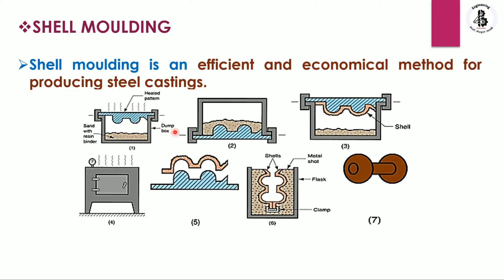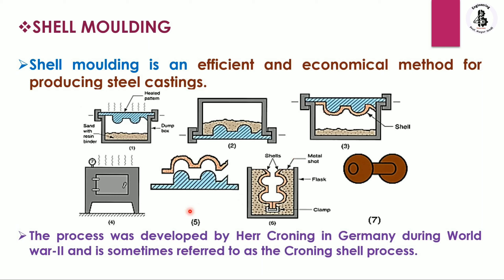Here you can see the dump box, which is filled with a mixture of sand and a resin binder. Various steps are involved for making the shell molding process. This process was first developed by Herr Croning in Germany during World War II and is sometimes referred to as the Croning shell process.